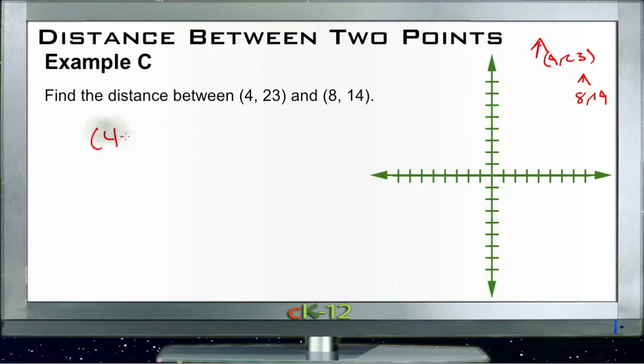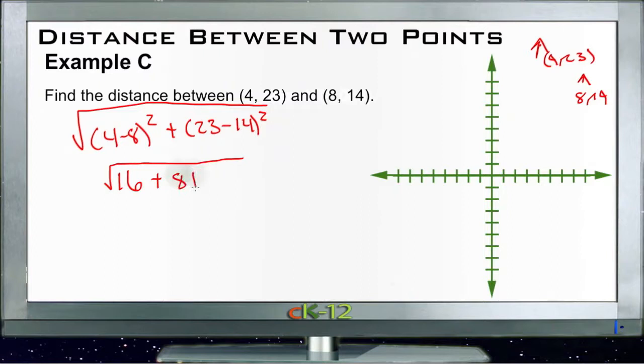So we'll have 4 minus 8 squared plus 23 minus 14 squared, and then the square root. Well, 4 minus 8 is -4, squared is 16, so we got 16 plus 23 minus 14 is 9, squared is 81. So we got 16 plus 81, square root will equal c.